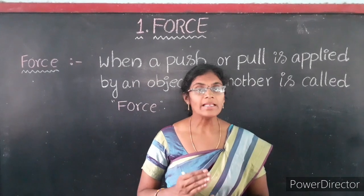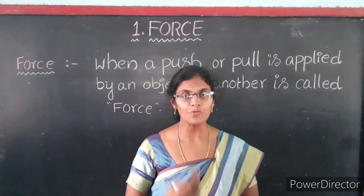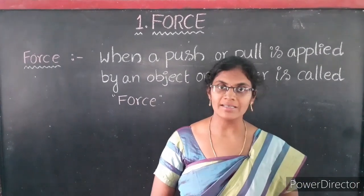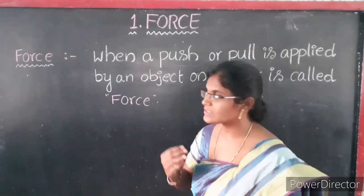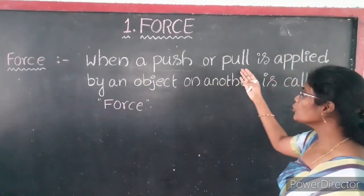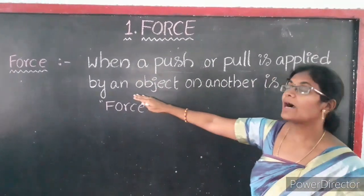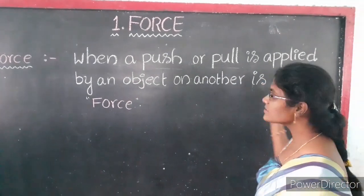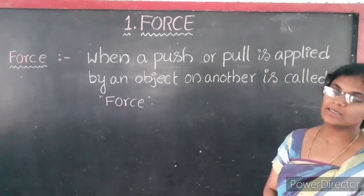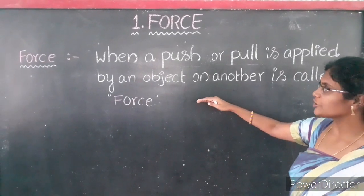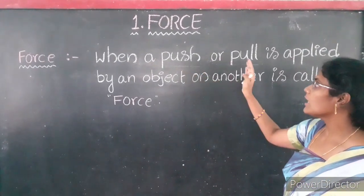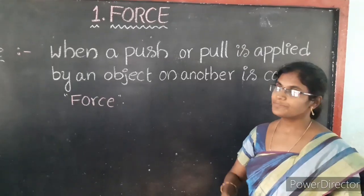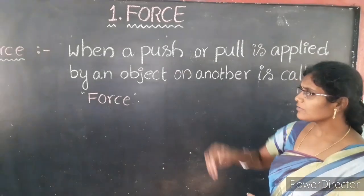Children, till now we discussed some information about force. Now, what is the exact definition of force? The exact definition of force is: when a push or pull is applied by an object on another, it is called force. Children, if you understand pull and push, you will get a clear idea about force.